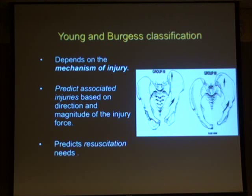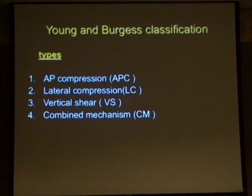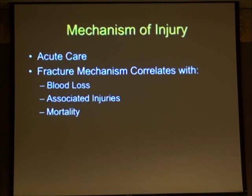Moving on to the Young and Burgess classification — the mechanistic classification — this is the one used most commonly on a day-to-day basis. It gives an idea of the mechanism of injury, allows prediction of associated injuries that may accompany the fracture pattern, and helps predict resuscitation needs. These are divided into four subgroups: anterior-posterior compression (APC), lateral compression (LC), vertical shear, and combined mechanism.